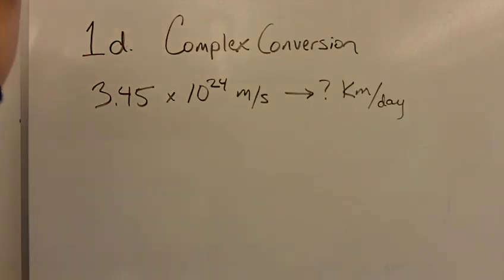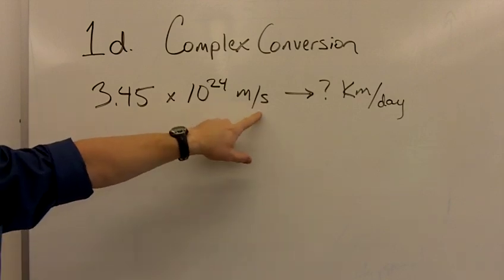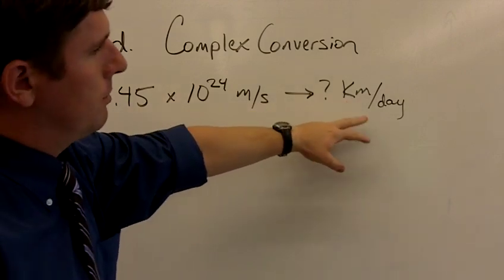So here we have a complex conversion: 3.45 times 10 to the 24th meters per second is how many kilometers per day.